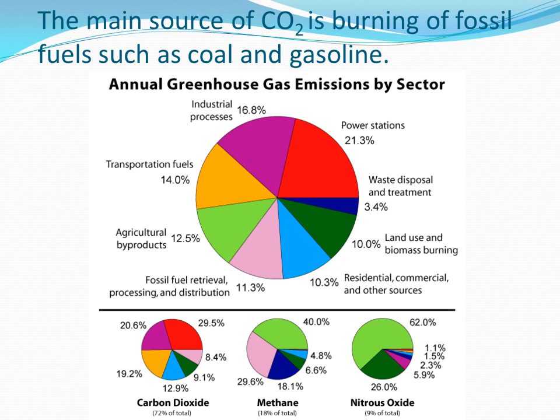Each of these is contributing greenhouse gases to our atmosphere. You can see on the bottom it's broken down based on carbon dioxide, methane, and nitrous oxide. The largest contributor for carbon dioxide is power stations.